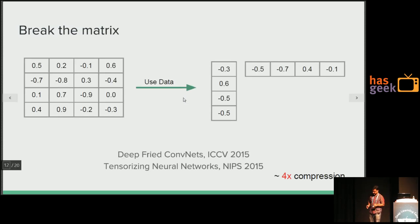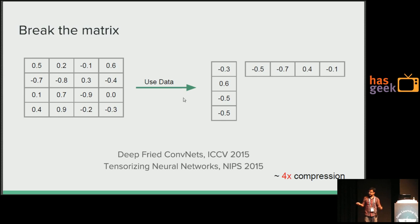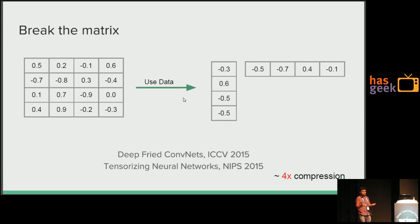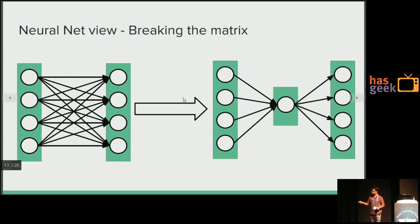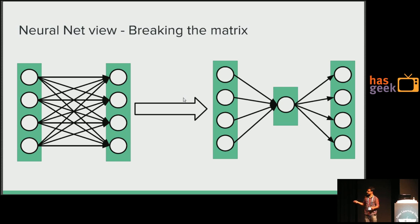Another very interesting strategy is called breaking the matrix, or matrix factorization. You have a 4×4 matrix and you break it into two parts. There are matrix factorization techniques that can break a matrix into two or more parts — general techniques that work for matrices, and techniques specific to neural networks. These convert one matrix into a product of two matrices. If your matrix has good properties like low rank, you will be saving on your number of parameters. Matrix factorization is actually very powerful in practice — if you want to compress neural networks, I would suggest using this first.